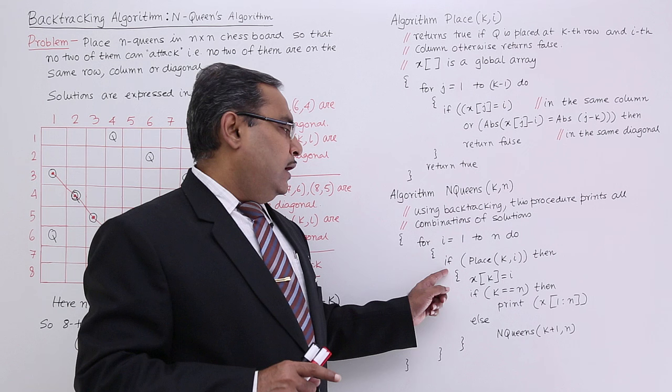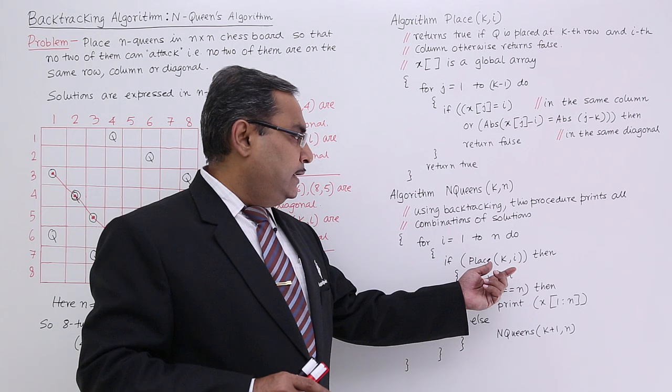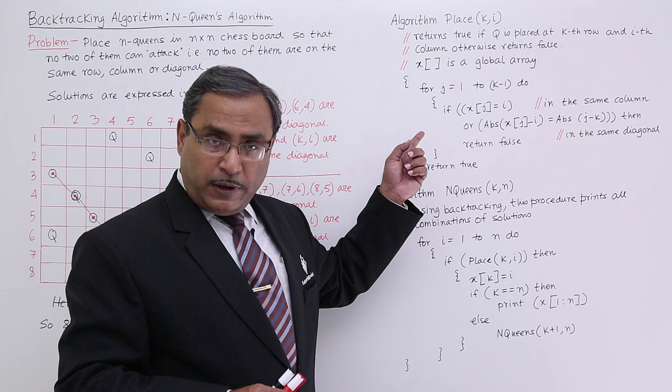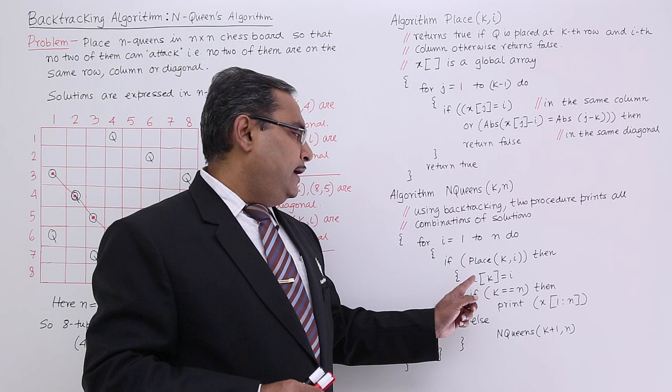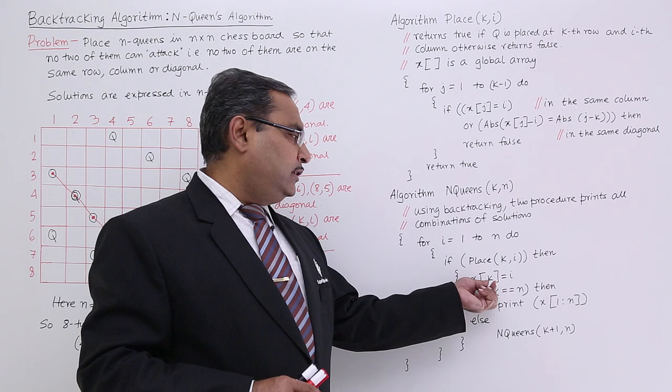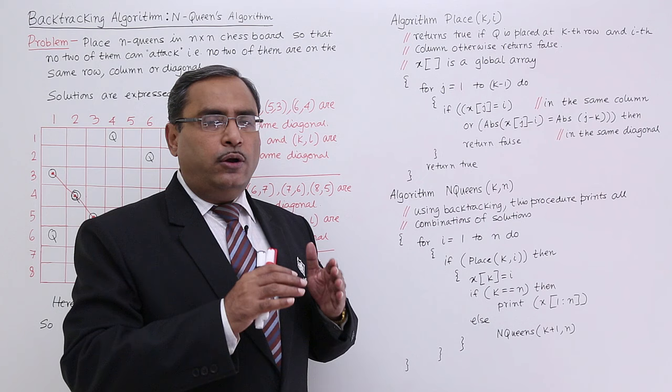Now, if Place(k, i) — if the kth queen can be placed at the i-th column — then Place is a function I shall be discussing right now. This Place function returns true if the kth queen can be placed at the i-th column, and it will return false if the kth queen cannot be placed at the i-th column. Then x[k] is equal to i, meaning x is a global array, and its kth location will be initialized to i because we got permission that the kth queen can be placed at the i-th column.